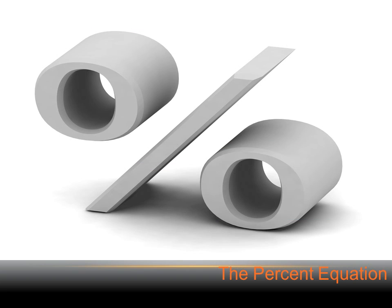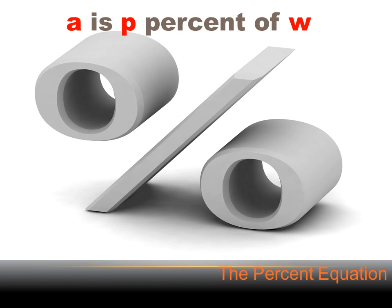After we've become comfortable moving back and forth between percentages, decimals, and fractions, there's really one more thing we have to learn. And when we learn it, we'll be able to do every percentage problem we come across. That one more thing is the percentage equation. The percentage equation is: A is P percent of W. A stands for a portion. We could have called it P, but we're using P for percent, so we call it A. W is the whole. In English, the percent equation is: a portion is some percent of the whole.